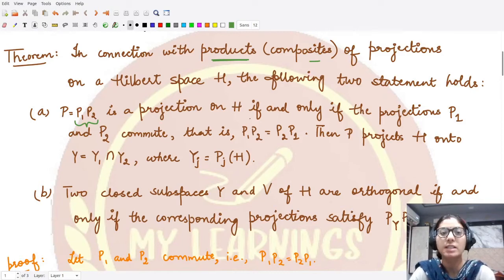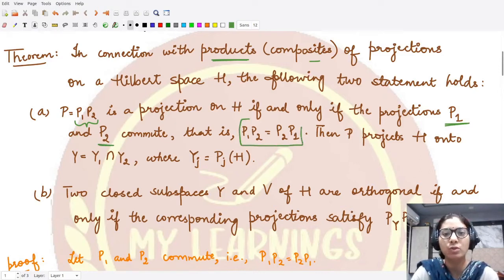This would be a projection whenever - let's see what are the conditions here. The condition is that the projections P1 and P2 should commute with each other, so that means P1P2 should equal P2P1.